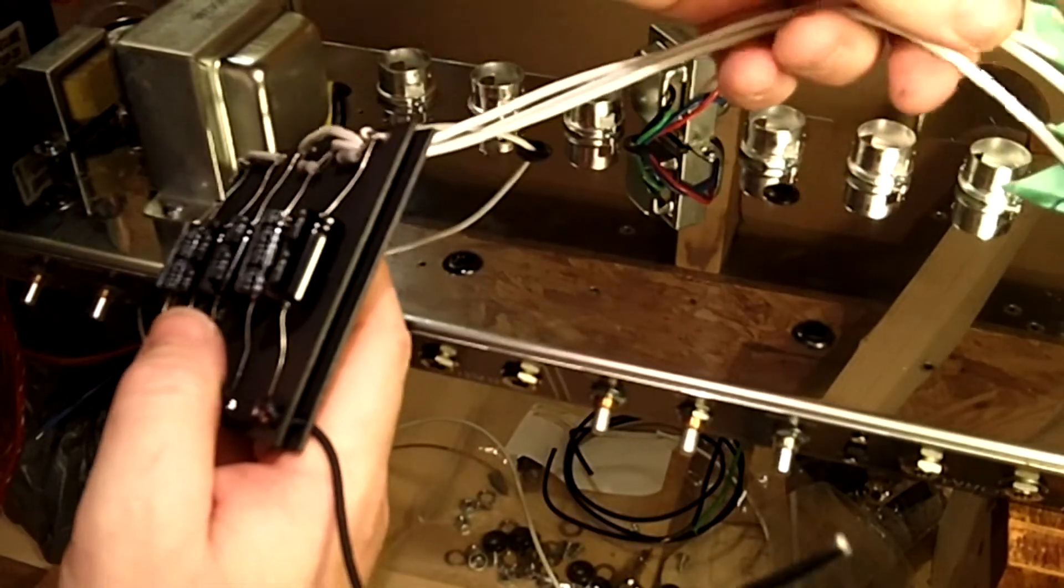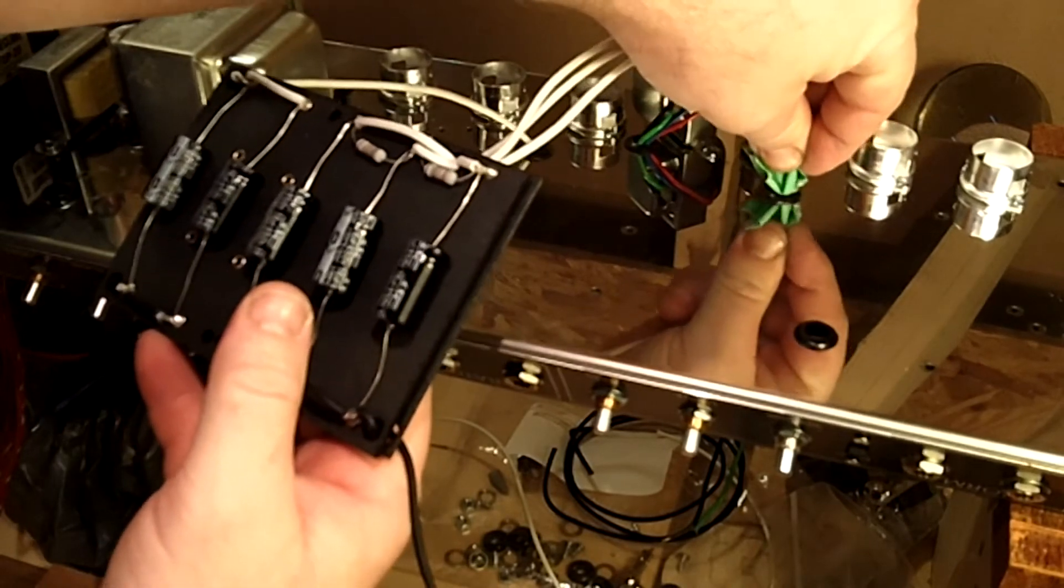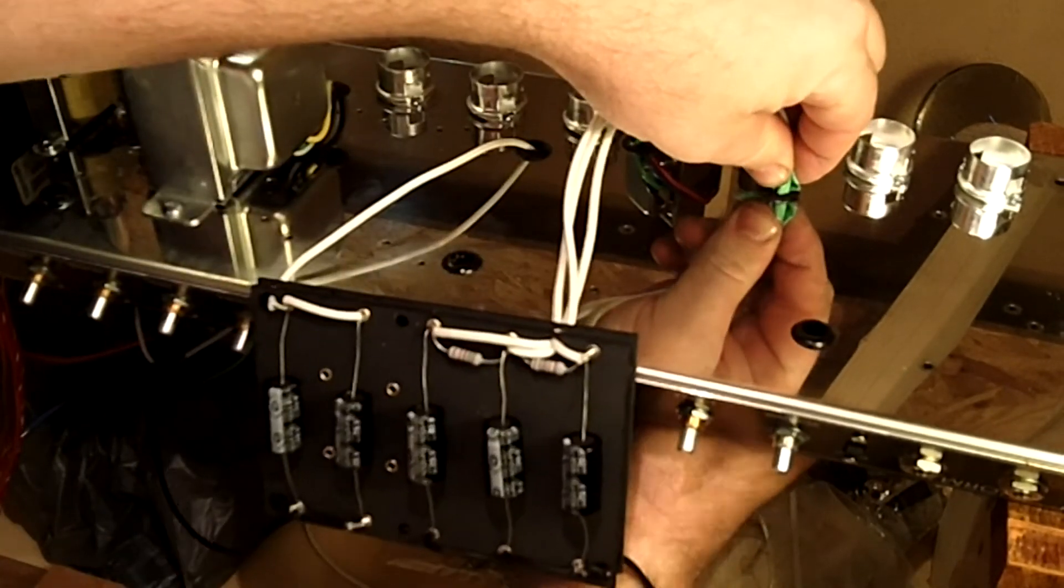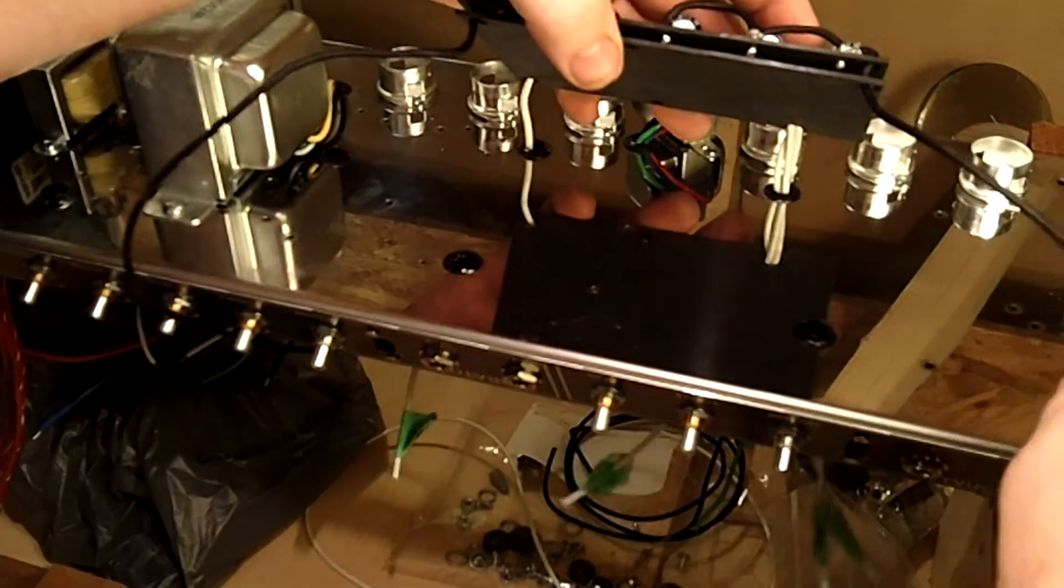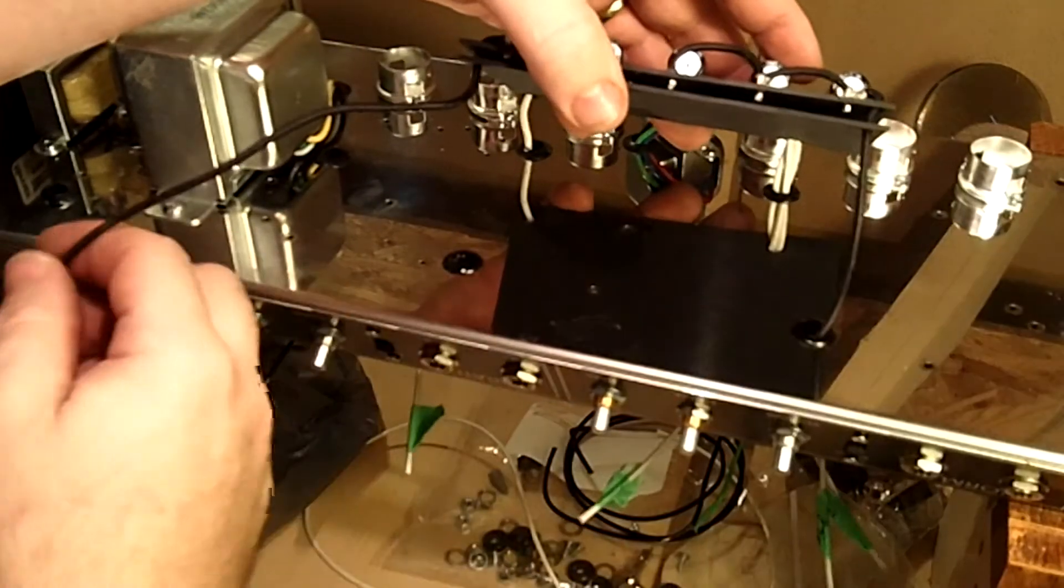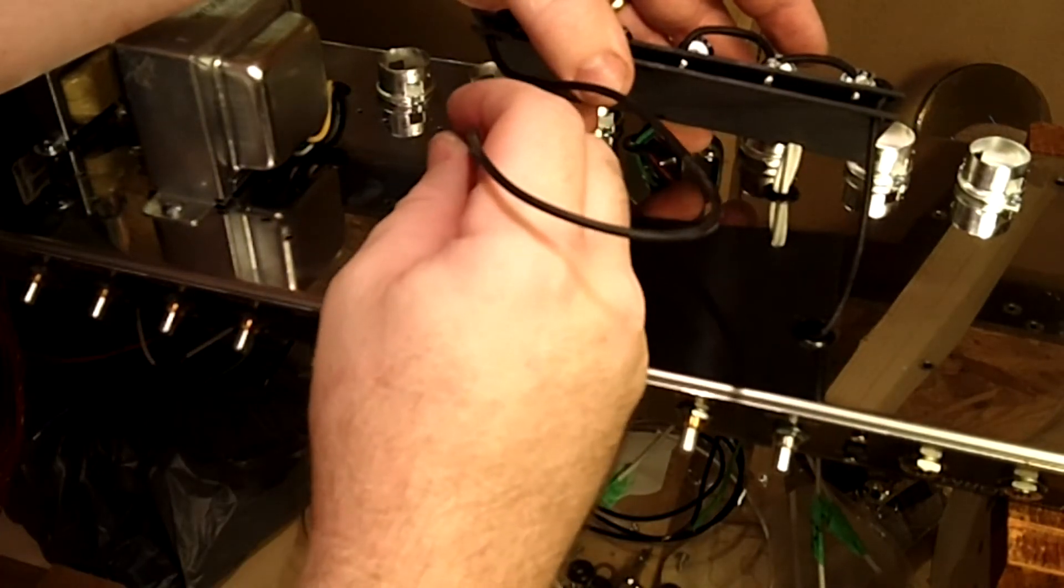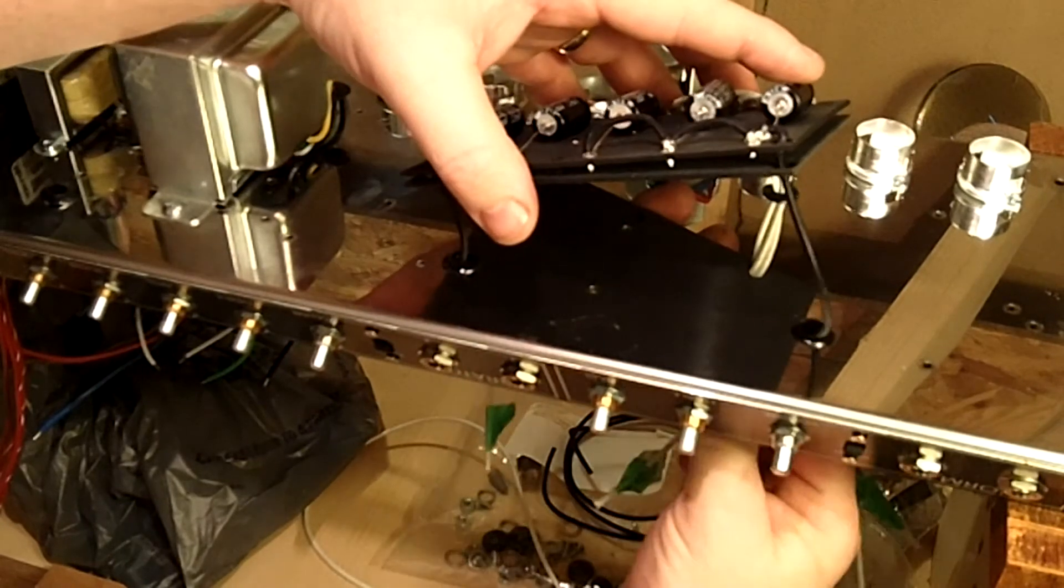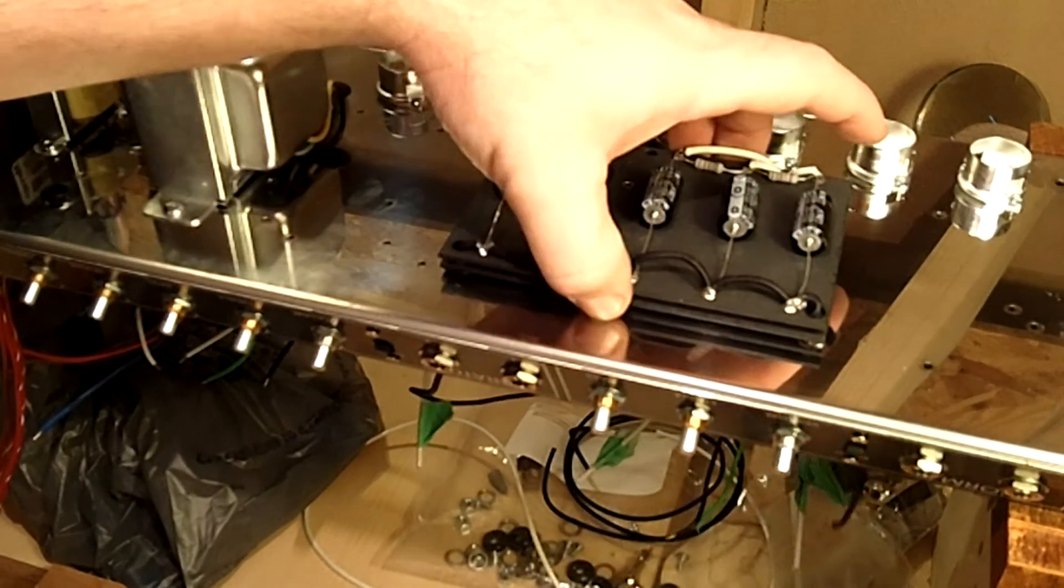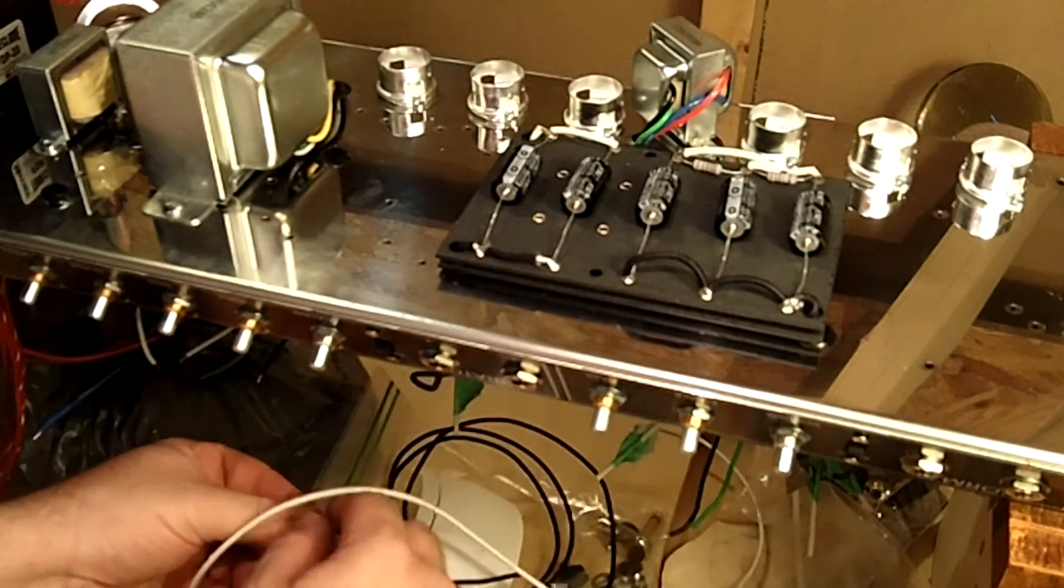So you can see how they line up. We're just going to feed those wires through those grommets. Get it set in there properly the way it's supposed to go. Make sure it's seated right and nothing's connecting to the chassis there.